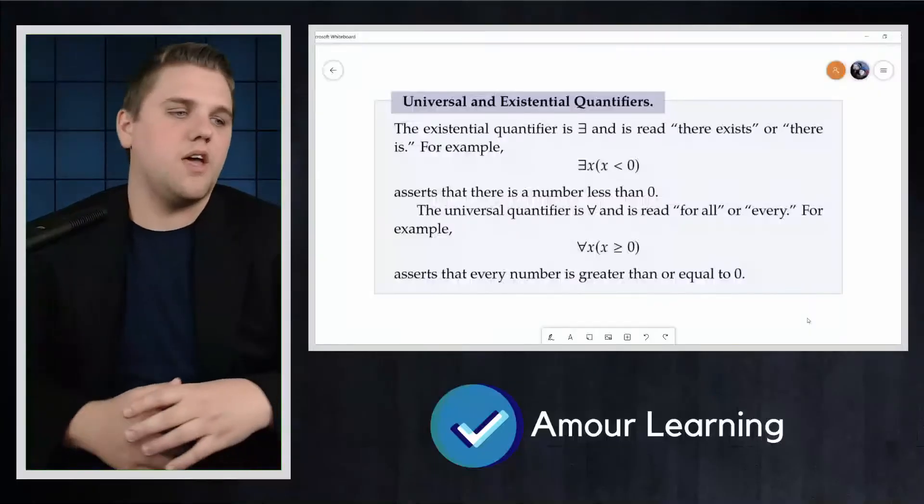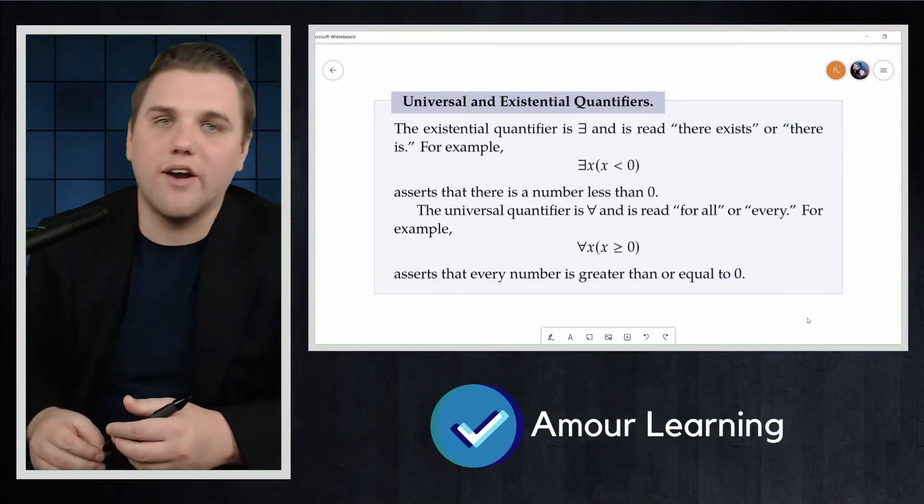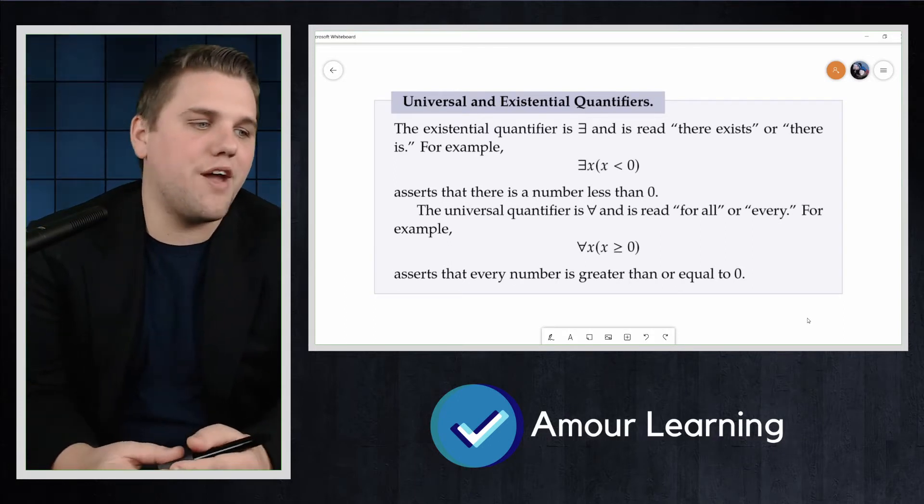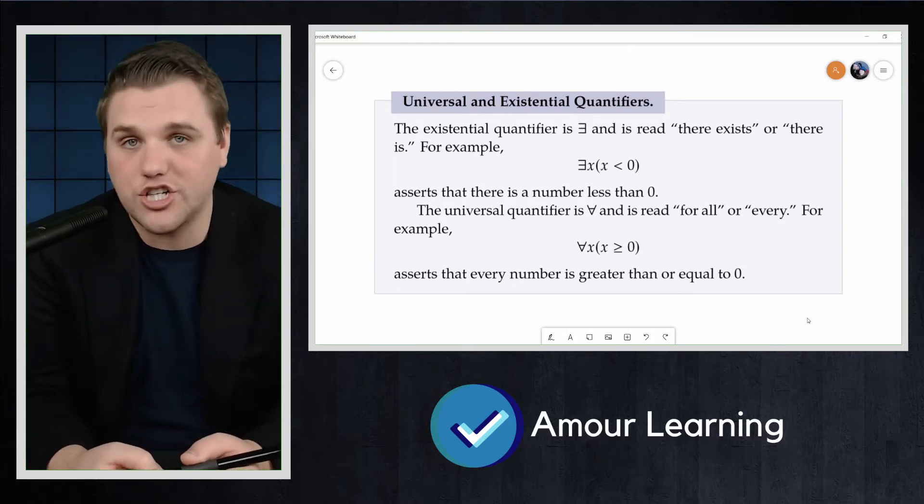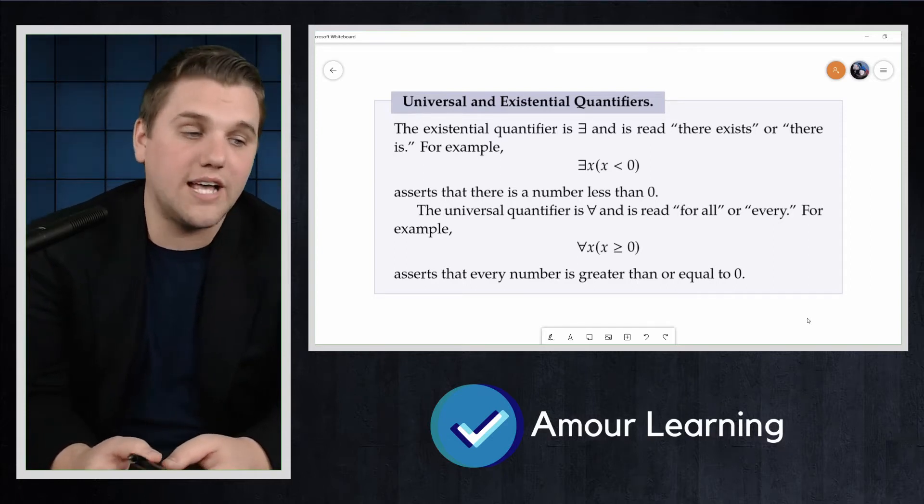All right, let's take a look at what quantification is first. The existential quantifier is, and that's a backwards E, that means there exists or there is. So for example, there is an X such that X is less than zero, asserts that there is a number less than zero.